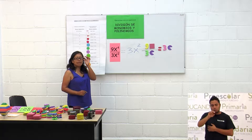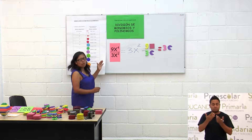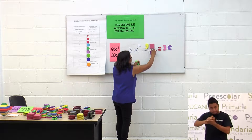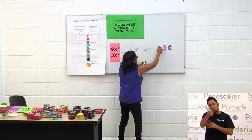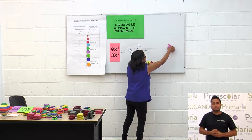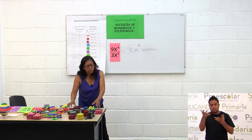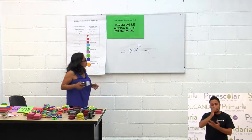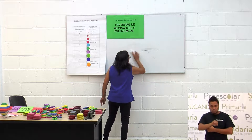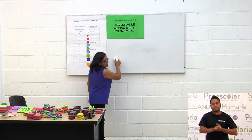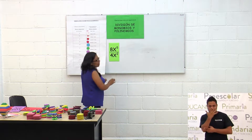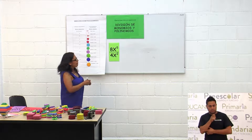¿Quedó claro? Ese es el resultado de esta división de monomio entre monomio. Vamos a hacer otro: 8x quinta entre 4x cuadrada.